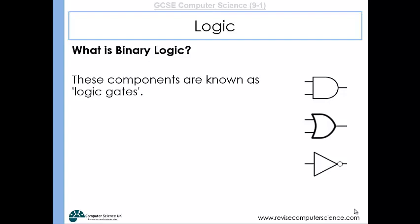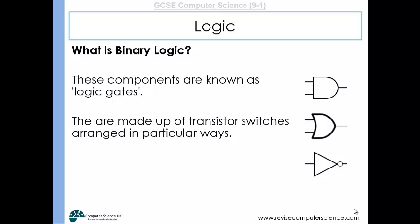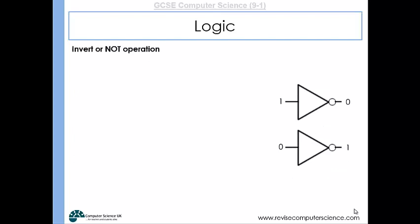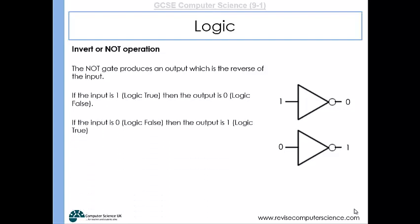Inside your CPU you've got lots of components known as logic gates. They're made up of transistors — transistor switches arranged in particular ways. And because they're so small, we use three symbols to represent these three logic gates. The first logic gate is the NOT gate. This is a triangle with a little circle at the end, and it basically reverses or negates any input it receives. So if it receives a one, it will output a zero.